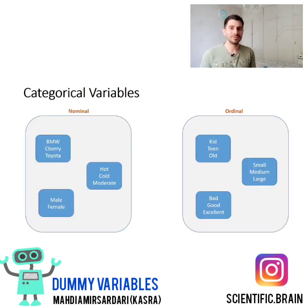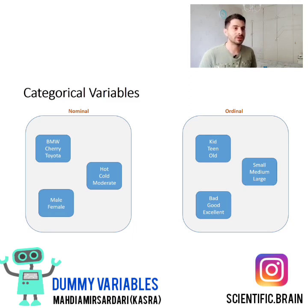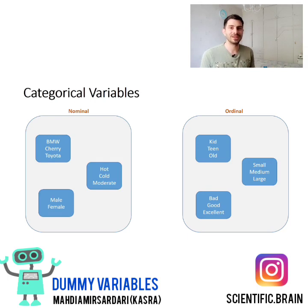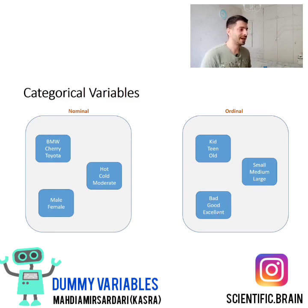How can we handle the problem? But before that, let me tell you some information about categorical variables. We have two types of categorical variables: nominal and ordinal. For variables where there isn't any order, we call them nominal variables — like BMW, Cherry, Toyota, Hot, Cold, Moderate, Male, or Female. They are categories, but there isn't any order between them. But in other examples, like kid, teen, old, or small, medium, large, or bad, good, excellent — there is an order between variables. So we call those ordinal variables. In this example, we are working with nominal variables.